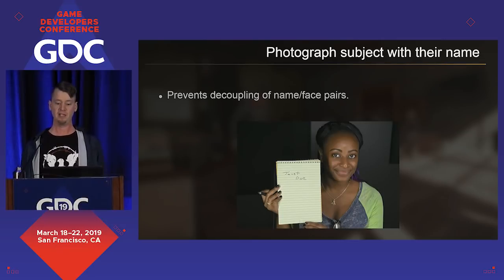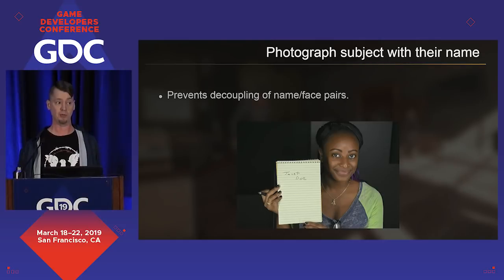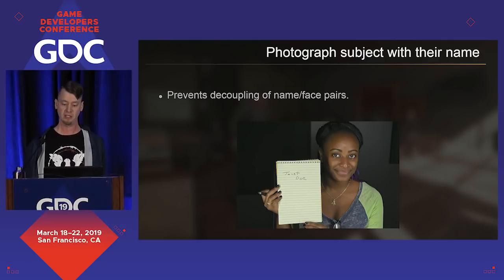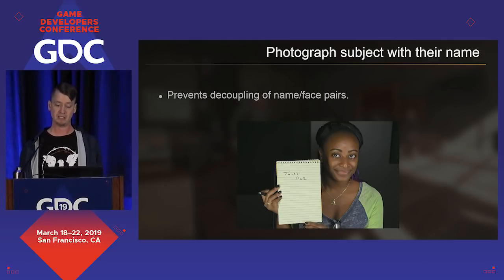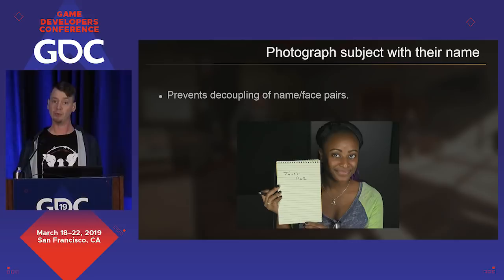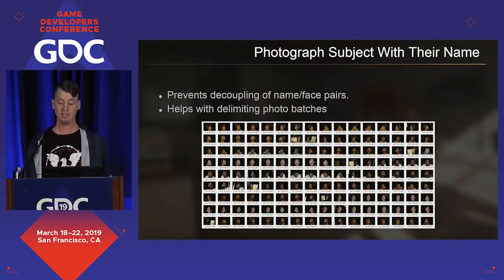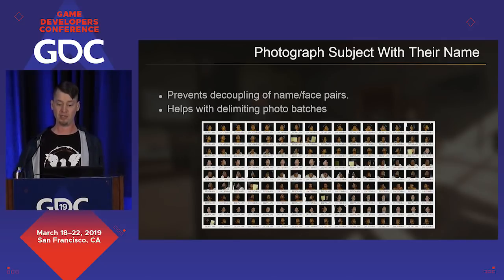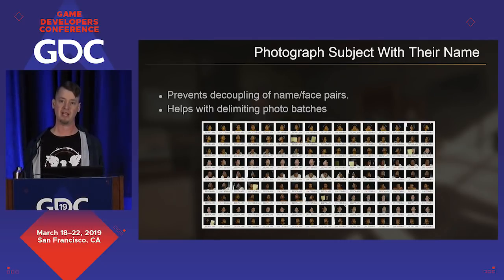Before you start a scan, take a photo of your subject holding up their name. At one point I could name every single one of the 206 faces I scanned, but I wasn't the only one working with these photos and we needed a way to identify them. Folders can get renamed, tables can get sorted — this identifier photo is a great way to keep things organized that can't get decoupled. It's also super helpful when processing a full day's worth of photogrammetry: I can dump 30 scans into one folder and use the thumbnail view, looking for this name photo as a delimiter for where one session ends and the next begins.